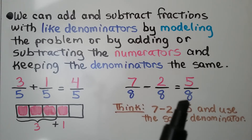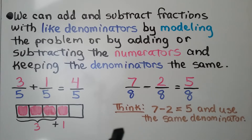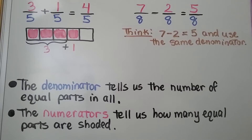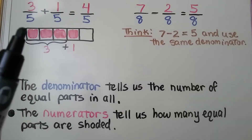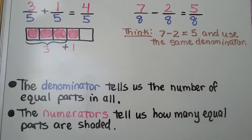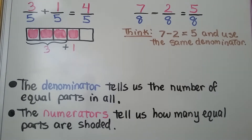We have seven-eighths minus two-eighths. We have like denominators, so we keep the eight in our answer and think: seven minus two is five. Seven-eighths minus two-eighths equals five-eighths. Remember, the denominator tells us the number of equal parts in all, and the numerators tell us how many equal parts are shaded.